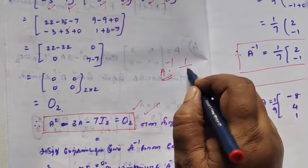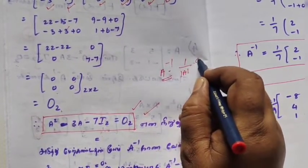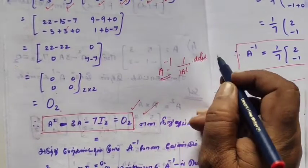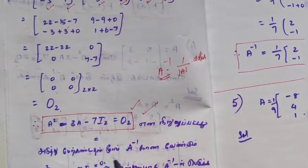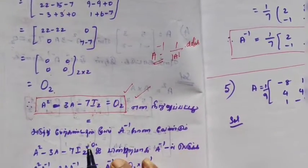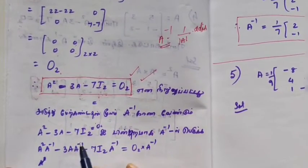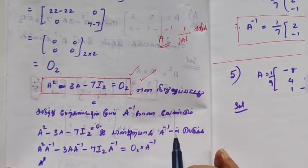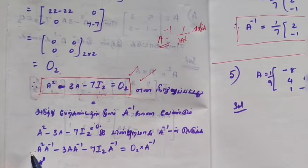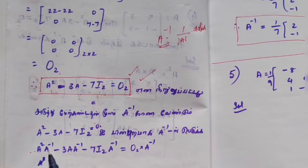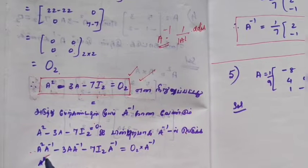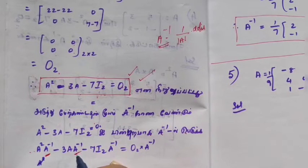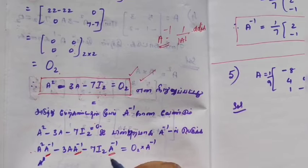In our question, we use the determinant of A. We pre-multiply and post-multiply by A inverse. So A² becomes A times A. We multiply by A inverse. All elements are multiplied by A inverse.